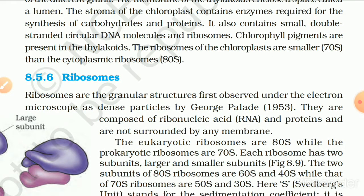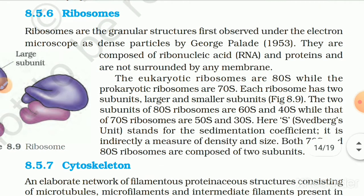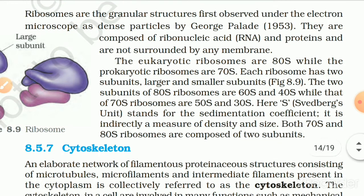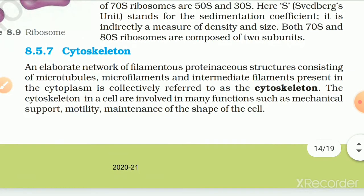8.5.6 Ribosomes. Ribosomes are granular structures first observed under the electron microscope as dense particles by George Palade. They are composed of ribonucleic acid and protein and are not surrounded by any membrane. The eukaryotic ribosomes are 80S while prokaryotic ribosomes are 70S. Each ribosome has two subunits — larger and smaller. The two subunits of 80S ribosomes are 60S and 40S, while those of 70S ribosomes are 50S and 30S. Here, S (Svedberg's unit) stands for the sedimentation coefficient, which is indirectly a measure of density and size. Both 70S and 80S ribosomes are composed of two subunits.